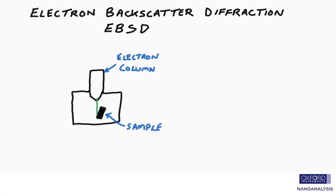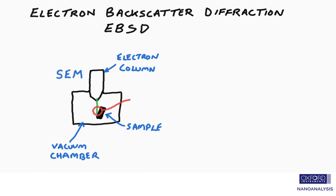So here in the sketch, we can label the different major parts of the SEM. But what is most relevant here is what happens when the electron beam, shown in green, interacts with the sample.